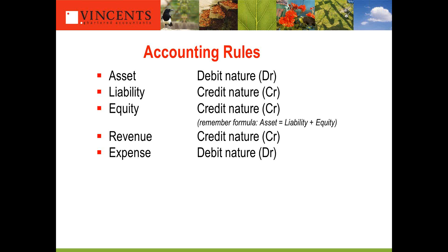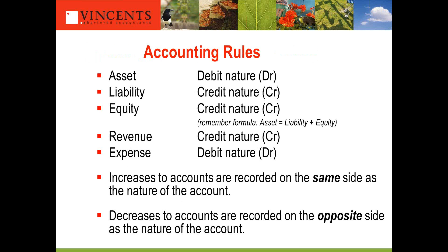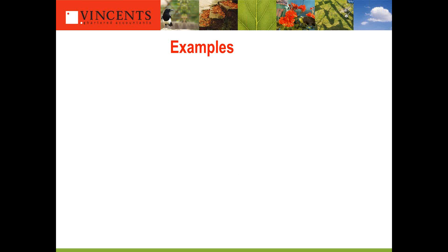So the rules are black and white. The earlier classification examples — like the resurfaced bitumen driveway — are not quite so black and white, and I'll come to that later when we're talking about manipulation. When we say accounts have a nature, increases are recorded on the same side as the nature of the account, and decreases on the opposite side.